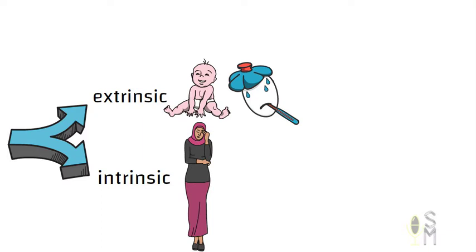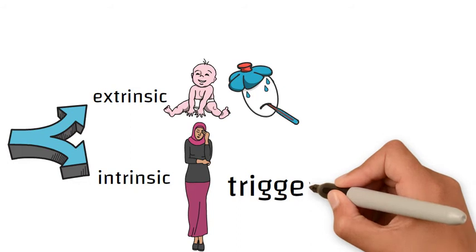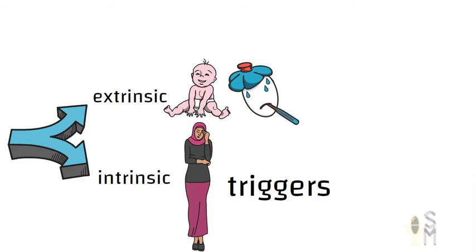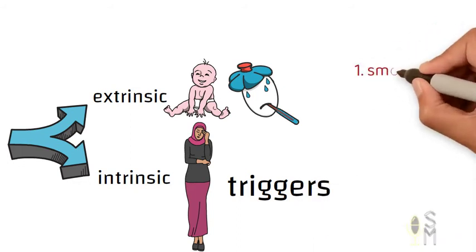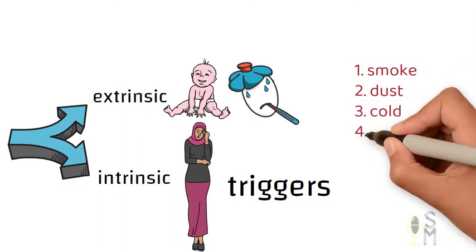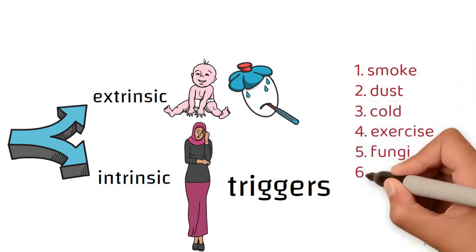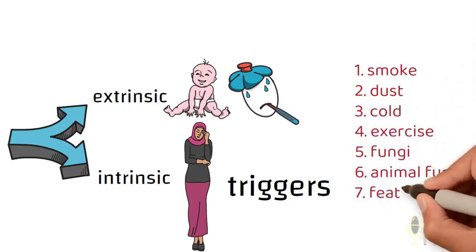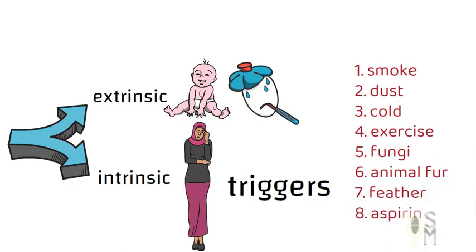An attack will be caused by certain things in both types of asthma. These things are known as triggers. Examples of triggers could be smoke, dust, cold, excessive exercise, fungus, fur or feather of different animals, and sometimes drugs such as aspirin.